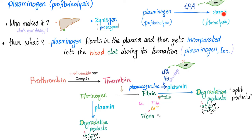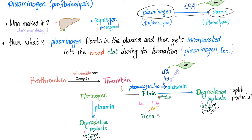Now, plasmin — but I'm interested in its father, the plasminogen, the pro-fibrinolysin. Plasmin is the fibrinolysin because it's going to lyse the fibrin. Plasminogen: who makes you? It's a protein. It comes from the liver. It's a zymogen, which means a pro-enzyme — something that will generate an enzyme, the enzyme here being the plasmin.